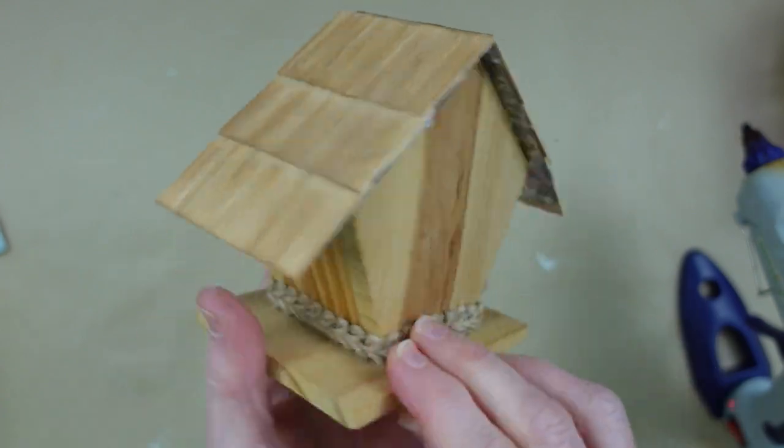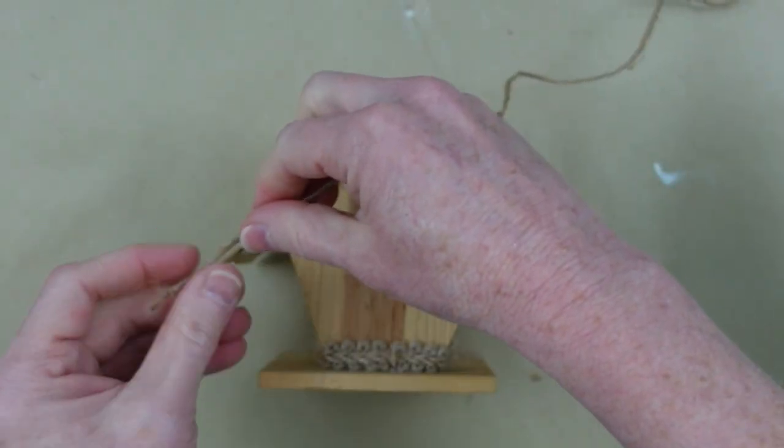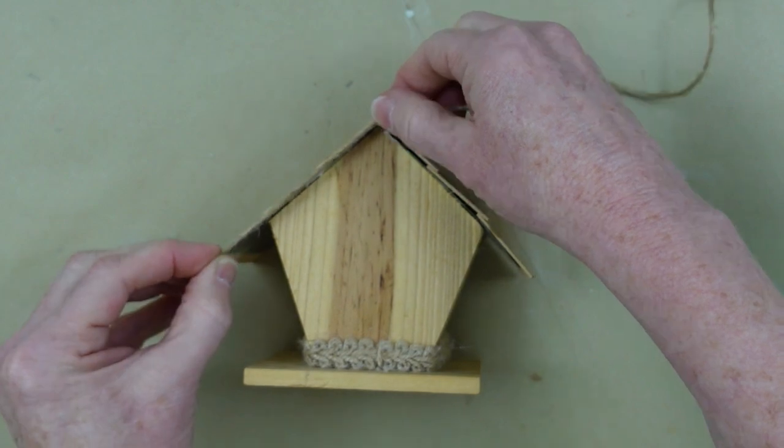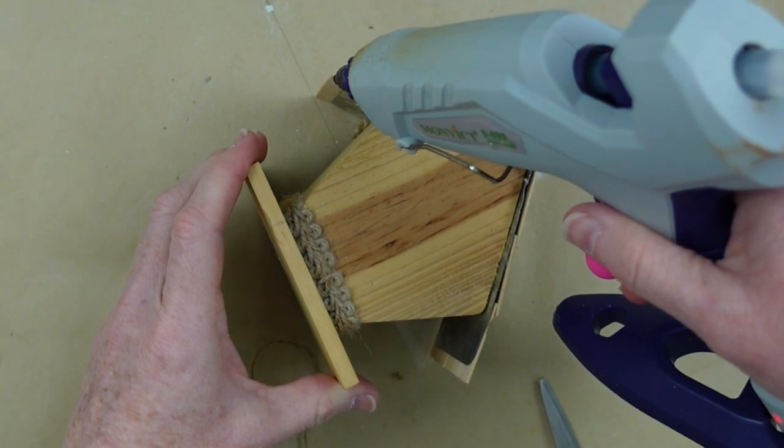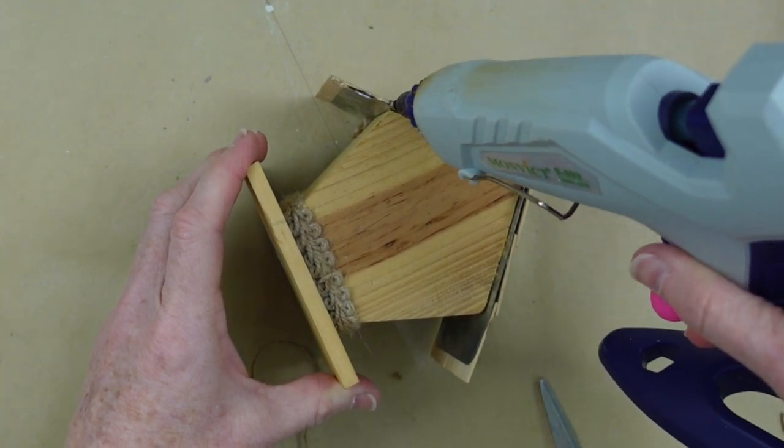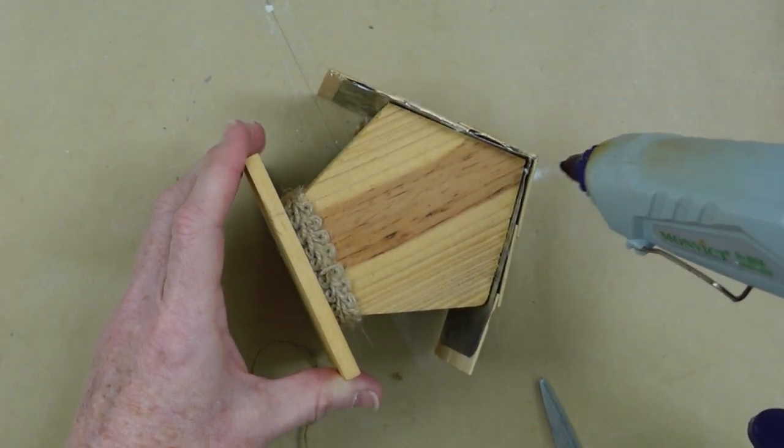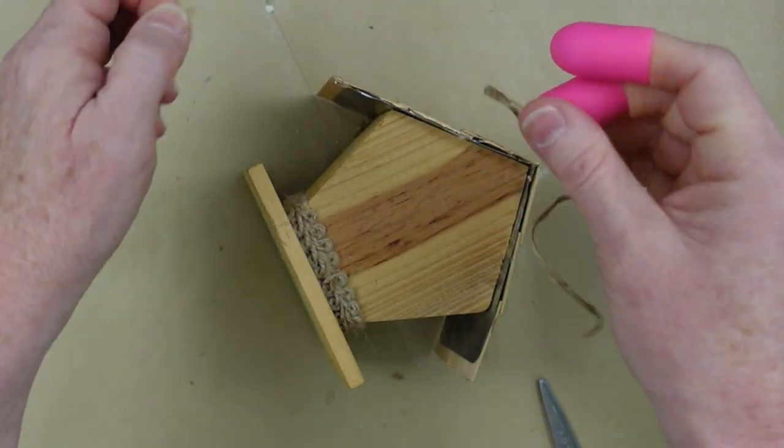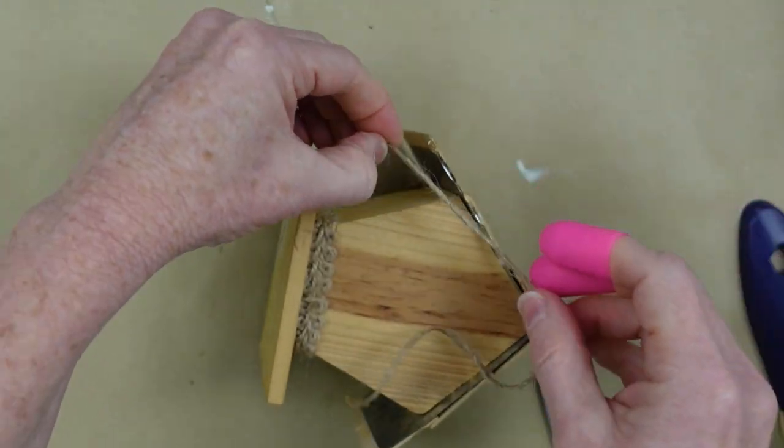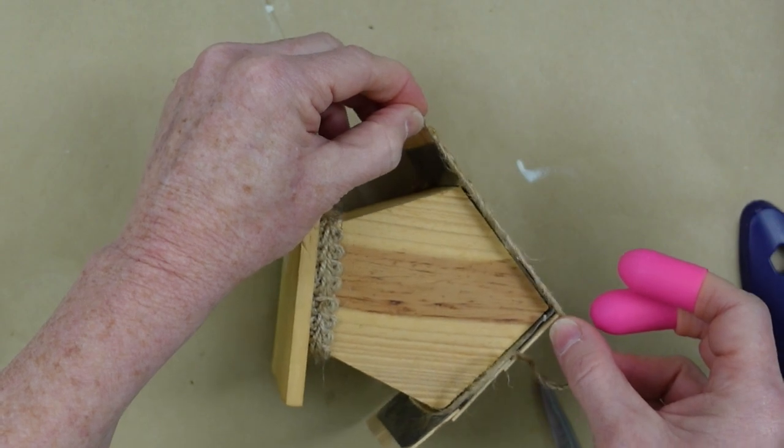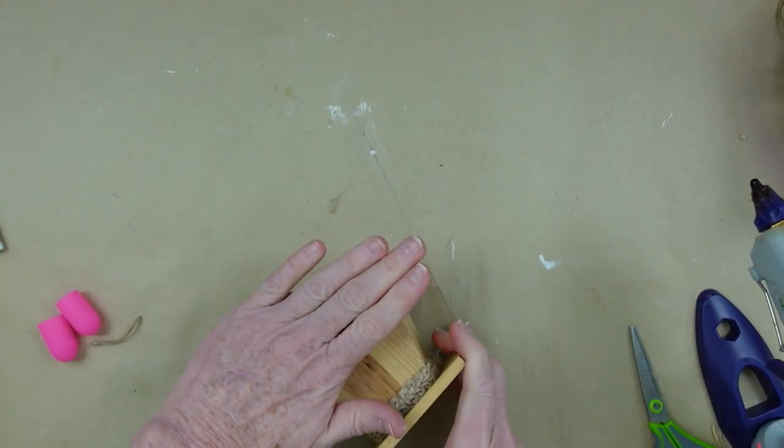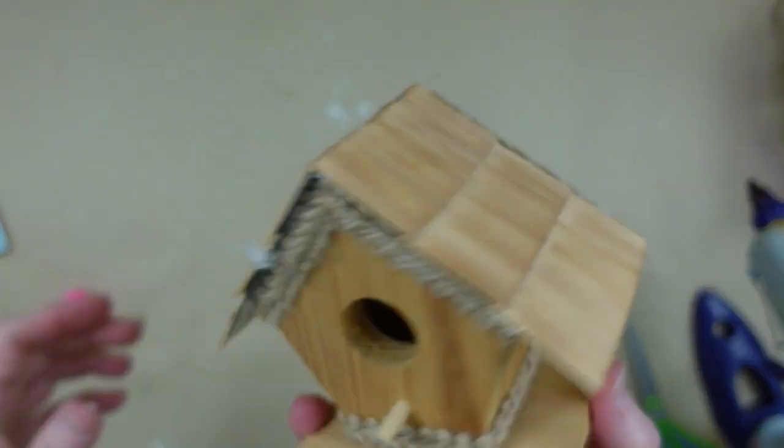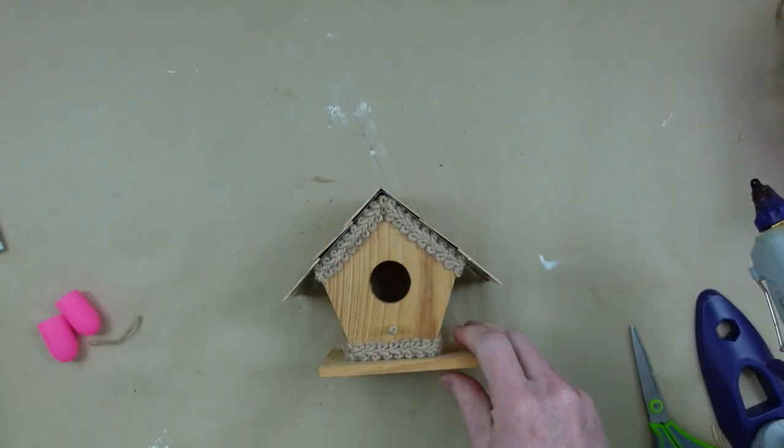But I noticed that there's just a tad of a gap of course between my shingles and the tin roof that's underneath. So I decided just to use a little bit of jute and cover that gap up. Now what you could do if you have a like the glue guns that have the little detail tip on them that would be perfect for this situation. But I don't have that so I did the best I could with my glue gun which I've always had you know pretty good luck with.